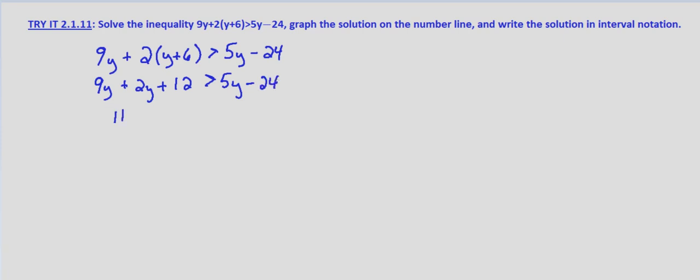Combining like terms we get 11y plus 12 is greater than 5y minus 24. We'll subtract 5y from both sides to get the variable terms on the left by themselves. So 11y minus 5y is 6y plus 12 is greater than negative 24.